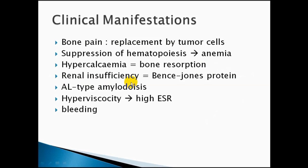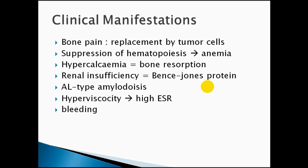Renal insufficiency is an important complication. The M protein includes a proportion of light chains, which have low molecular weight. These light chains either pass into the urine causing proteinuria — also called Bence Jones protein — or accumulate in the kidney tissue causing myeloma kidney. Alternatively, light chains accumulate in other tissues such as the liver or spleen, causing AL-type amyloidosis — primary amyloidosis from light chain accumulation.